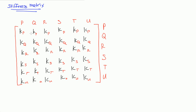Then I label the columns, because we read matrices row first, then column. So the second subscript for each K value corresponds to the column: P, Q, R, S, T, U. This gives every entry in the matrix a unique row-column subscript pair.